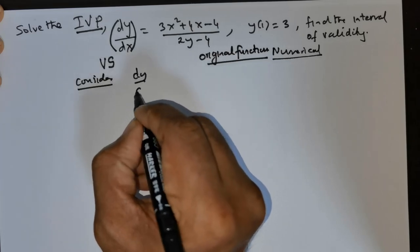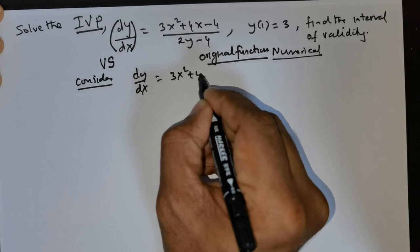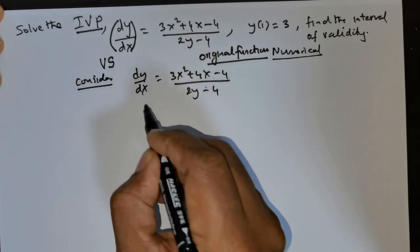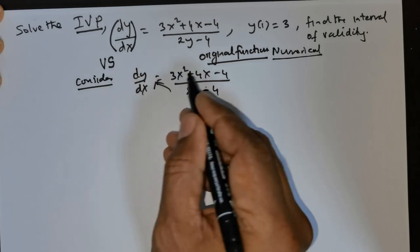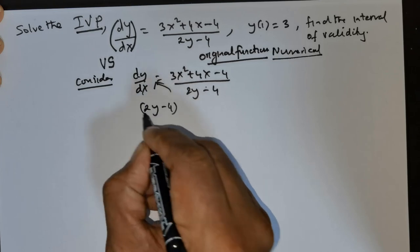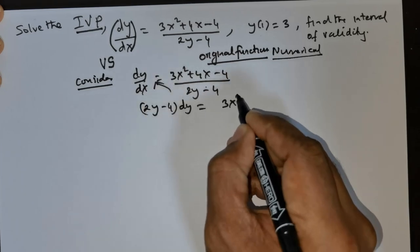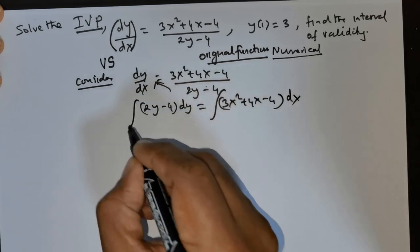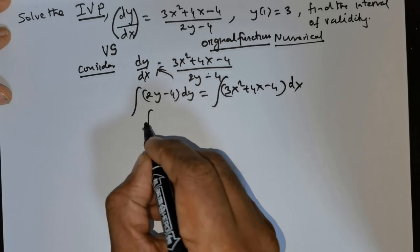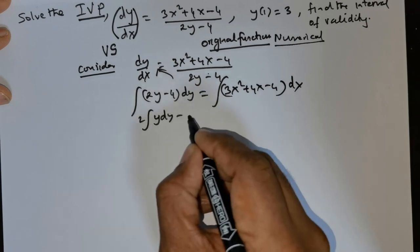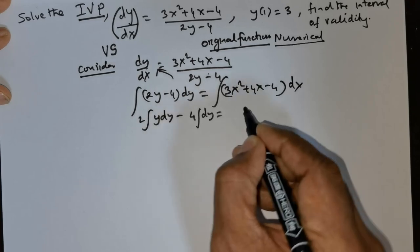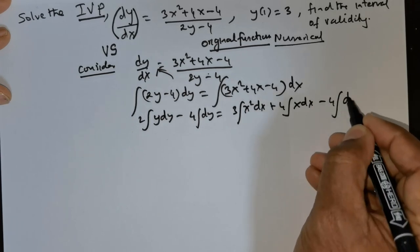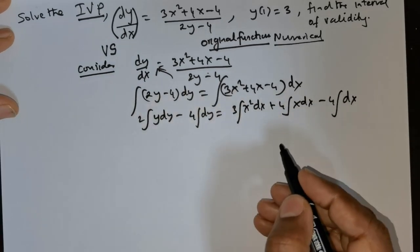Consider dy/dx to be equal to (3x² + 4x - 4) divided by (2y - 4). We move all the y terms to the left and all the x terms to the right. So this is going to be (2y - 4)dy = (3x² + 4x - 4)dx. We integrate both sides and distribute: 2y·dy - 4·dy = 3x²·dx + 4x·dx - 4·dx.